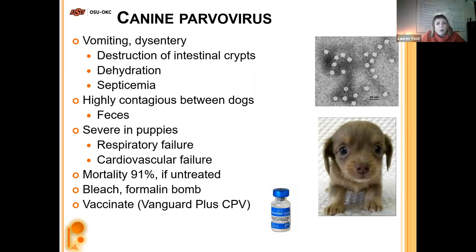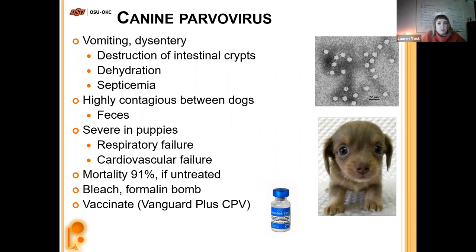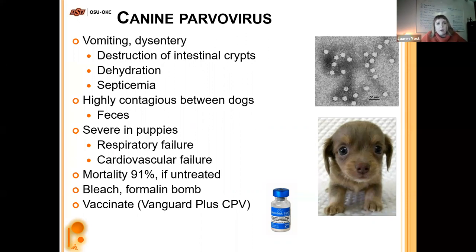Canine parvovirus leads to vomiting and dysentery, destroys intestinal crypts — all those little folds in the intestine — causing dehydration and septicemia. It's highly contagious between dogs through feces and very severe in puppies, leading to respiratory failure and cardiovascular failure. Mortality is 91% in pups if not treated. To eliminate parvo from a facility like the humane society, treat the entire area with bleach and a formalin bomb to kill any lingering virus. There is a vaccine, so vaccinate your puppy.